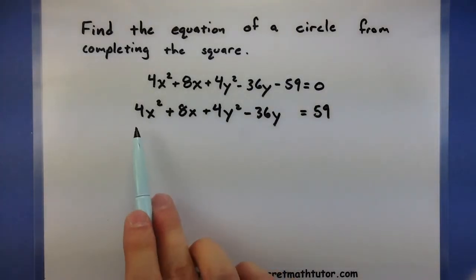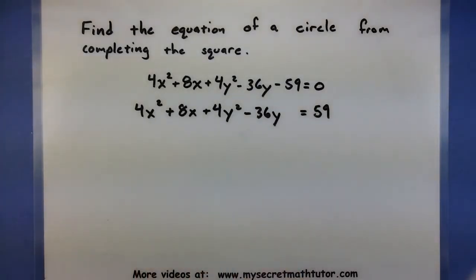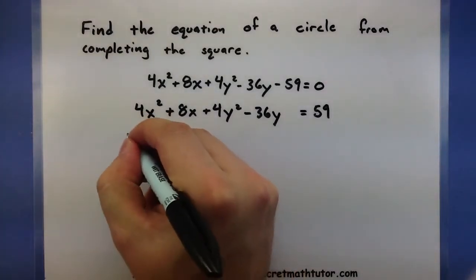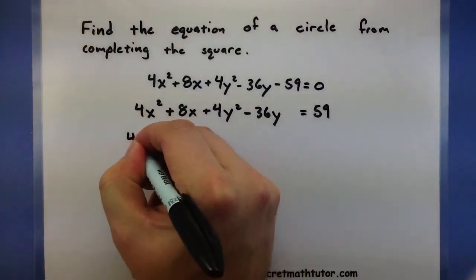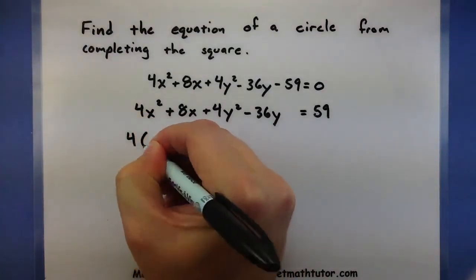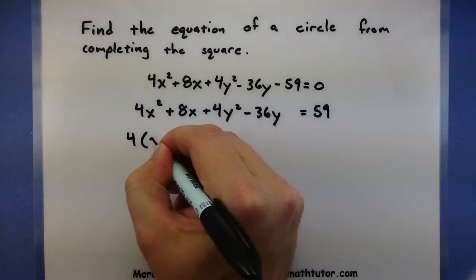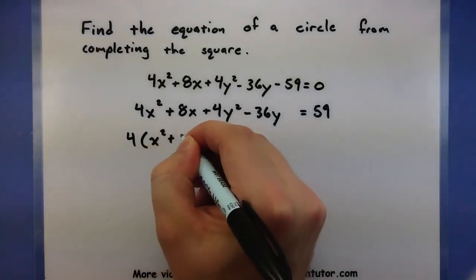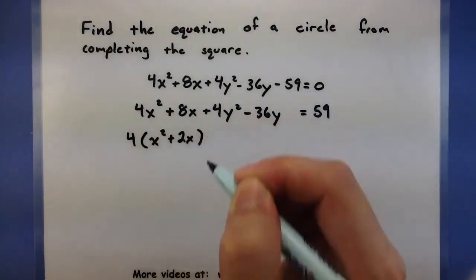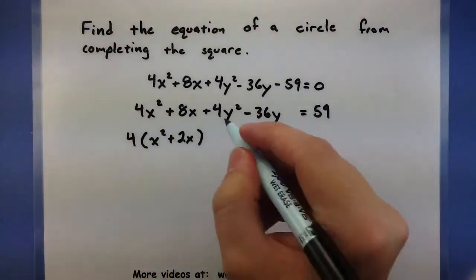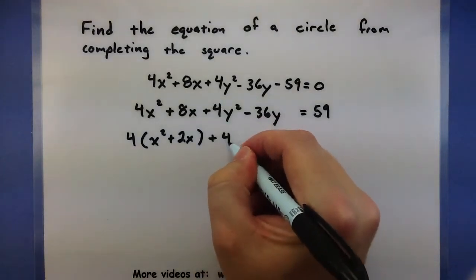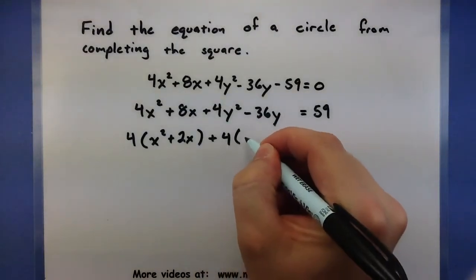Now, if you have any coefficients in front of your squared terms like I do, go ahead and factor them out. I'm going to factor a 4 from my x's, and it looks like I can also factor a 4 from my y's.